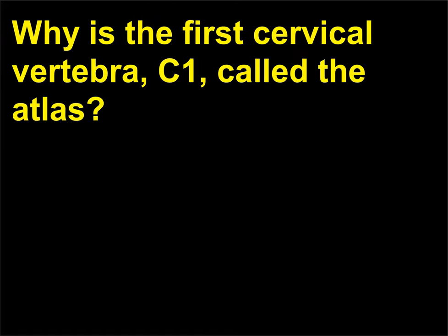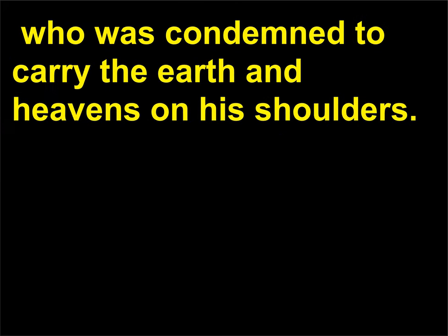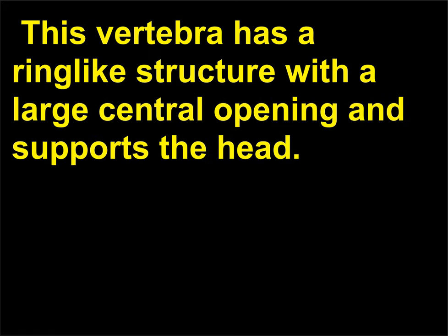Why is the first cervical vertebra, C1, called the atlas? The first cervical vertebra is called the atlas after the Greek god Atlas, who was condemned to carry the earth and heavens on his shoulders. This vertebra has a ring-like structure with a large central opening and supports the head.